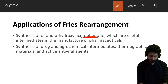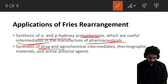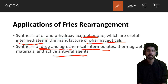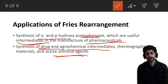The application of the Fries rearrangement: it is used to synthesize para-hydroxy acid phenol derivatives used as intermediate compounds in the pharmaceutical industry, drug preparation, agrochemical industry, and for making antiviral agents. It is highly important in the pharmaceutical and medical industries.